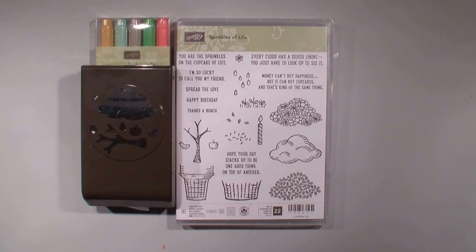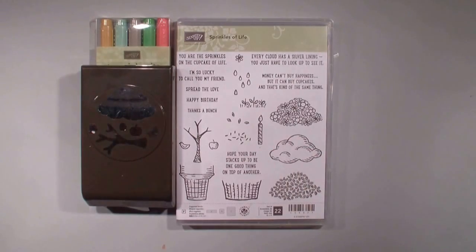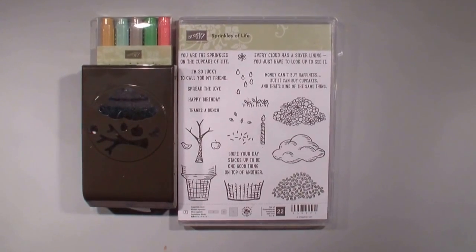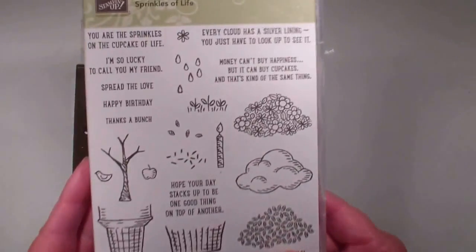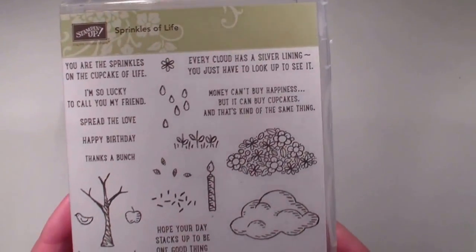Only a few more days till June 2nd and the release of the new Stampin' Up catalog and the new Ronald McDonald charity stamp set that Stampin' Up is featuring this year. It is called Sprinkles of Life.